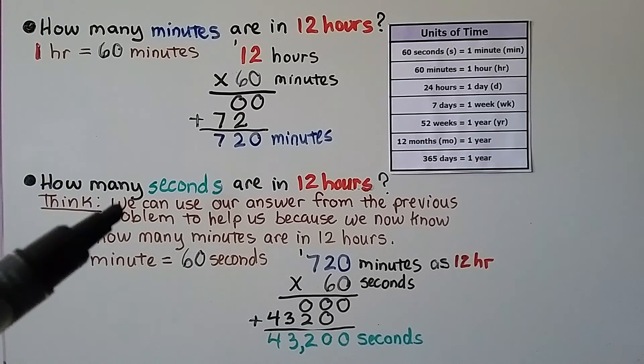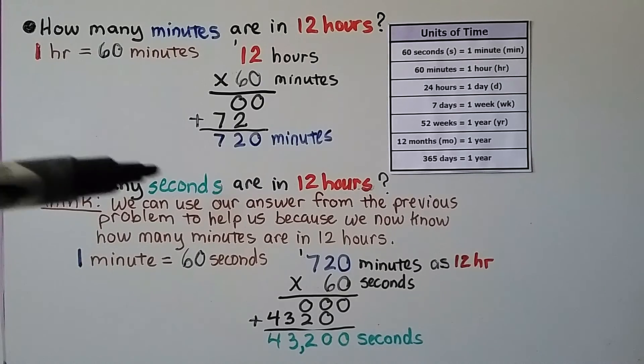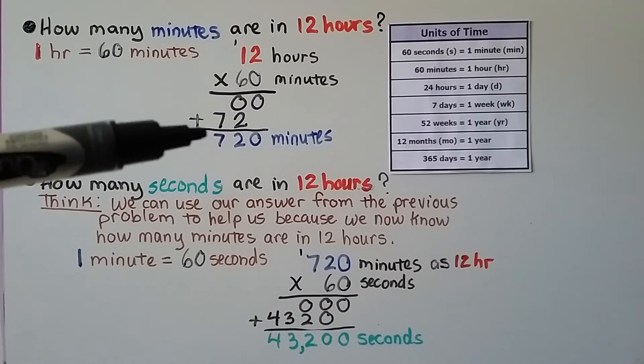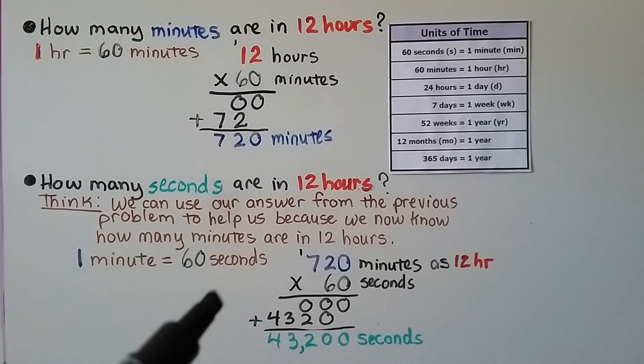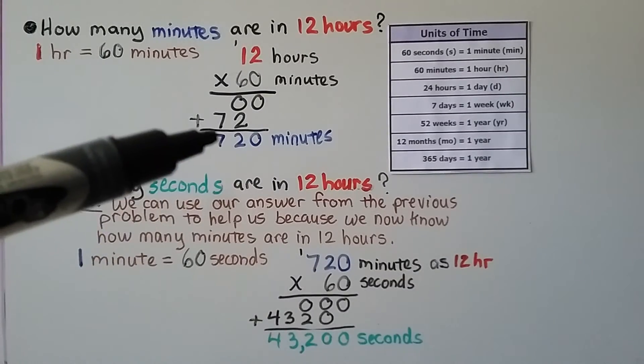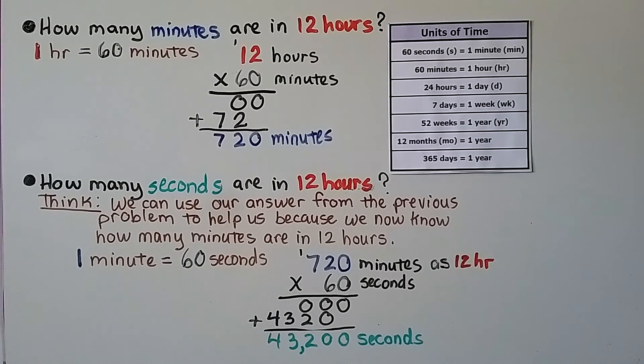Now how many seconds are in 12 hours? So we think we can use our answer from this previous problem to help us because we now know how many minutes are in 12 hours and one minute is 60 seconds. So we can multiply the 720 minutes times 60 seconds to find that it's 43,200 seconds.